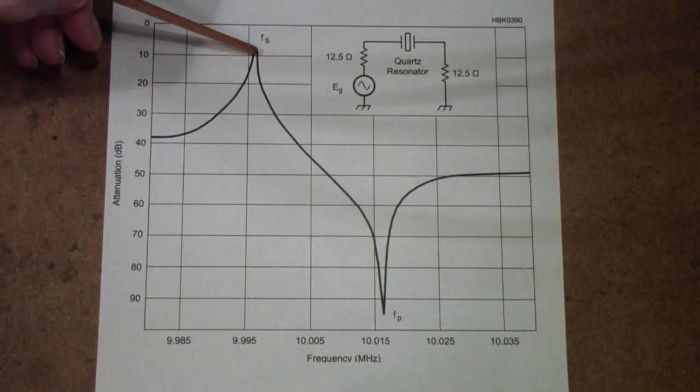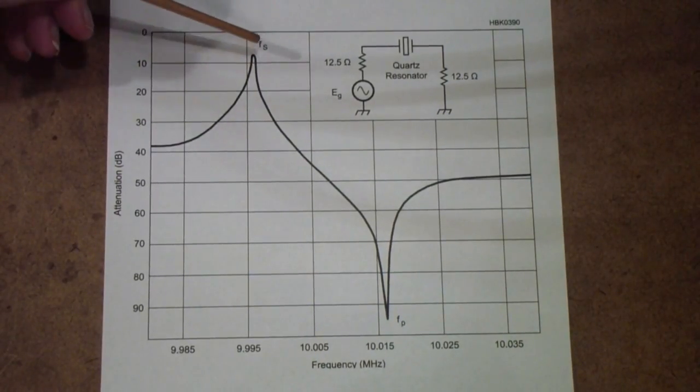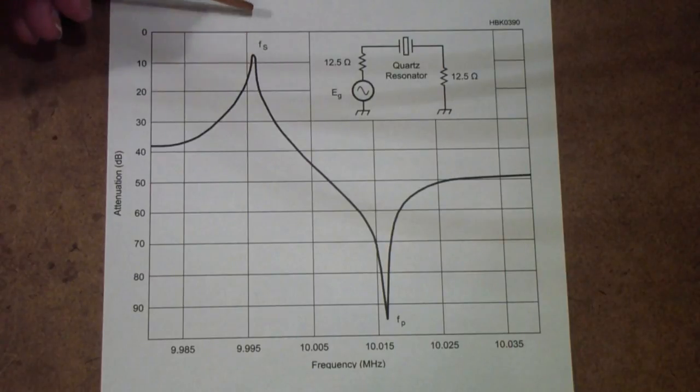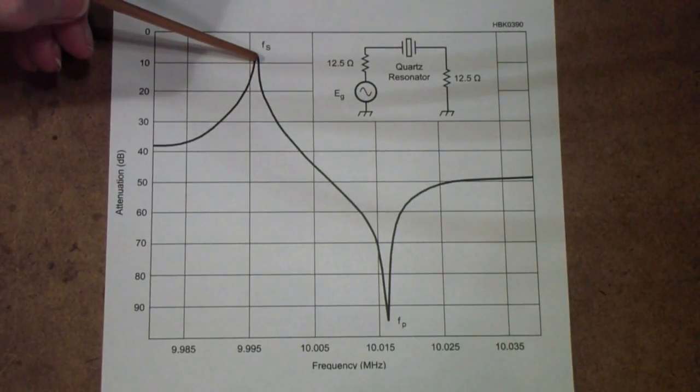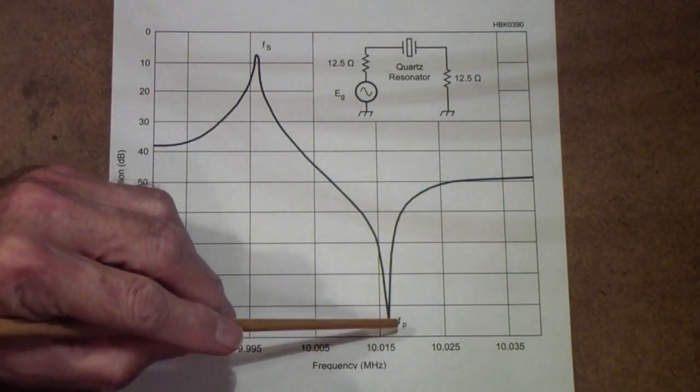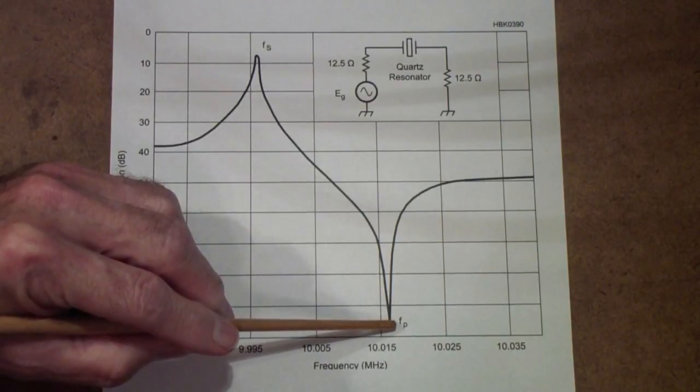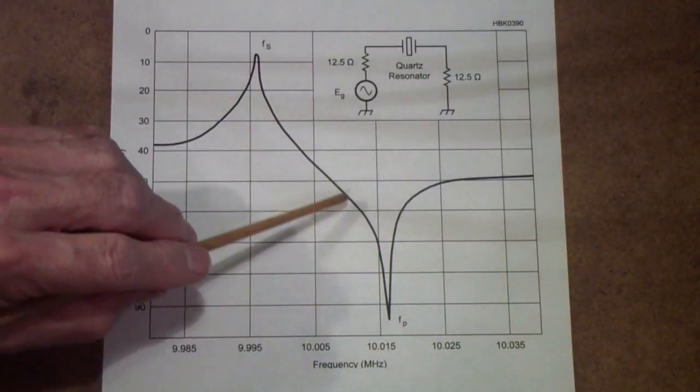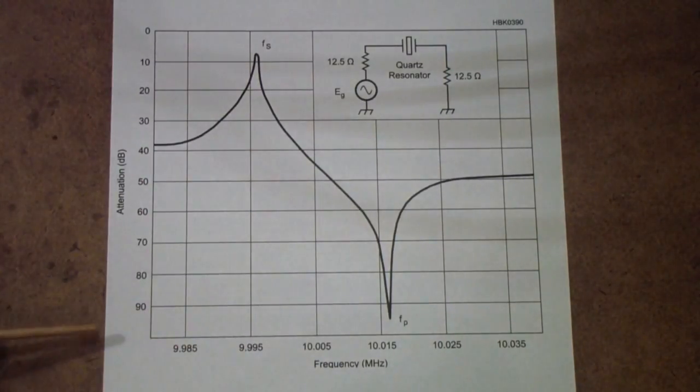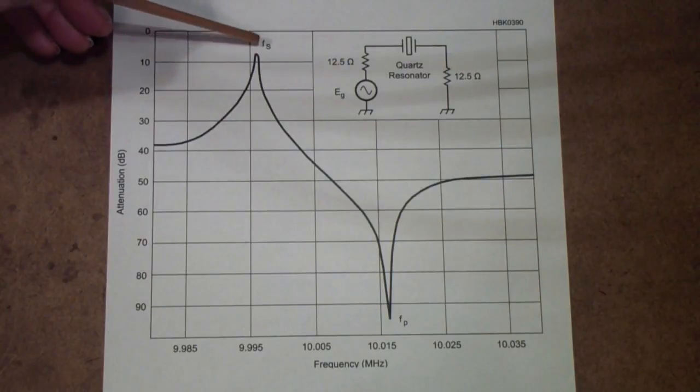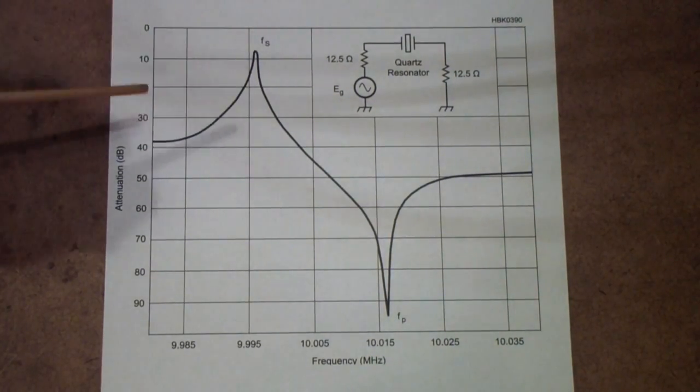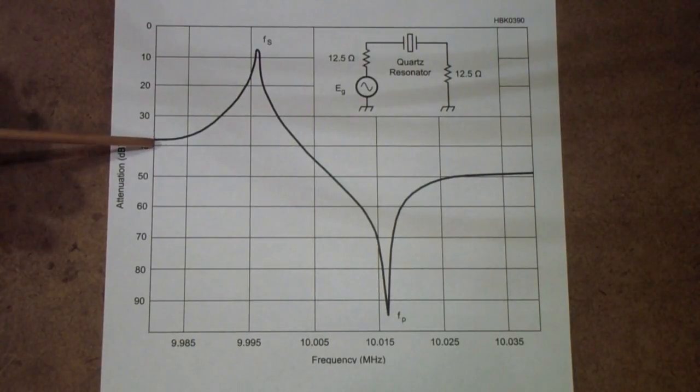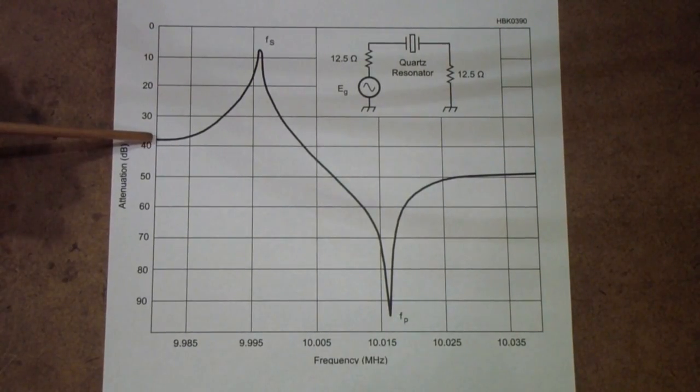Now, understand, a crystal filter always attenuates. So, there's always a little bit of loss when you put the receiver in the crystal position. But, at this second frequency, called the parallel resonant frequency of the crystal, you get a tremendous attenuation. That is, tremendous relative to the small attenuation at the series frequency, or even the attenuation out here in the outside the crystal's frequency.